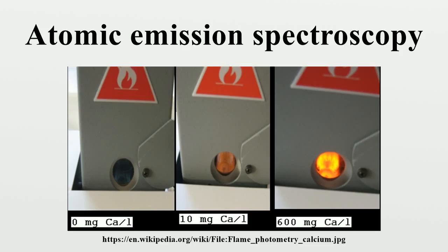Flame emission spectroscopy: A sample of the material is brought into the flame as either a gas, sprayed solution, or directly inserted into the flame by use of a small loop of wire, usually platinum. The heat from the flame evaporates the solvent and breaks chemical bonds to create free atoms. The thermal energy also excites the atoms into excited electronic states.